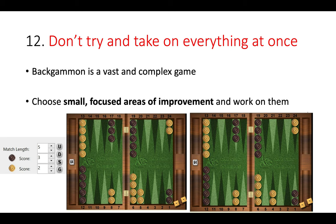Step twelve: don't try to take on everything at once. Backgammon is a vast and complex game that becomes more complicated the longer you play, but also more thrilling and beautiful. Choose small, focused areas of improvement and work on them. For example, here are two positions at three-away, two-away — what is the correct cube action? Focus on those small areas, use your database, ask yourself the right questions. You're not going to jump from a 10 PR to a 5 PR overnight, but you might go from 10 to 9.5 to 8.8. Use these 12 steps to help guide you.